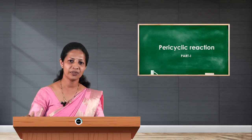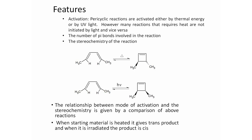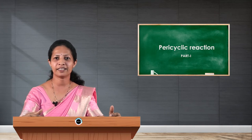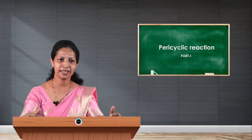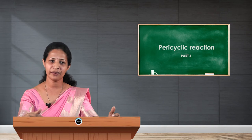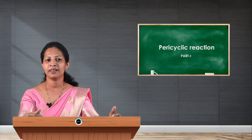Now let us discuss the features of a pericyclic reaction. There are three features: first is activation; second is the number of pi bonds involved in the reaction; and third is the stereochemistry of the reaction. Pericyclic reactions are activated either by thermal energy or by UV light. There is an interrelationship between the mode of activation and the stereochemistry of the given reaction.